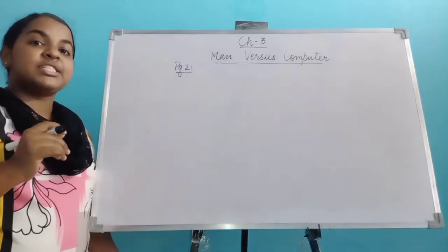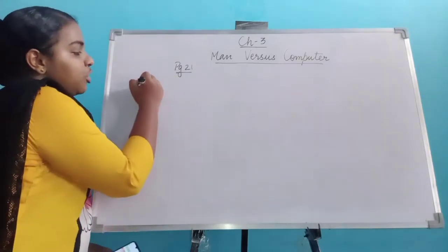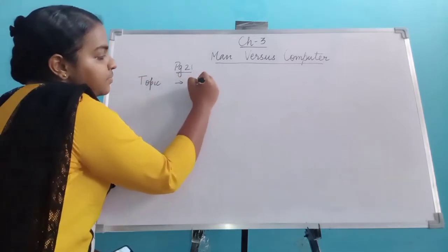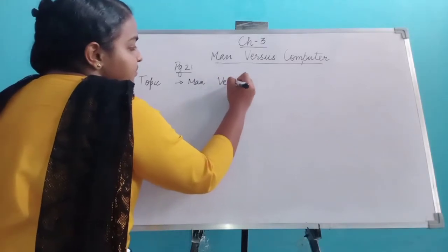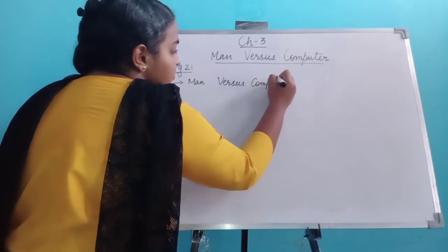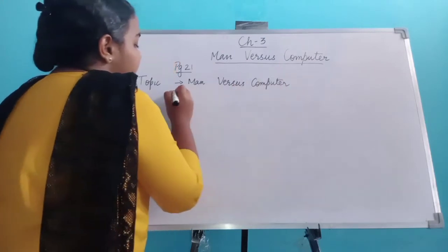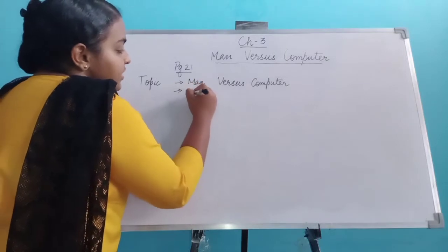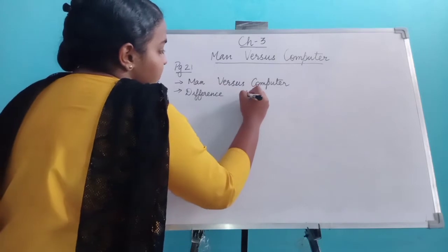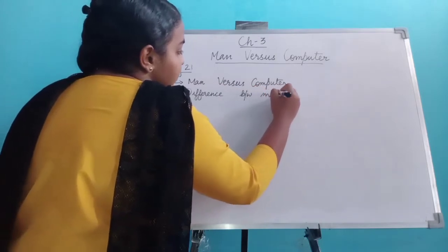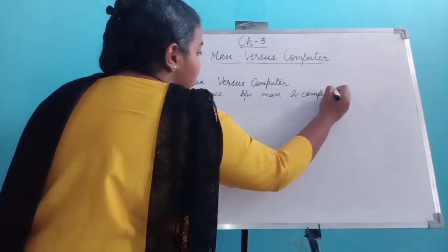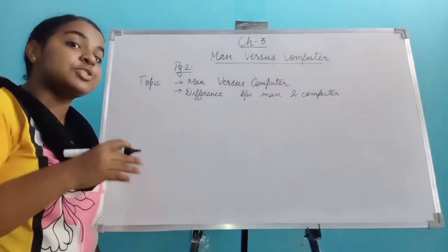In page number 21 you can see the topics which we are going to cover: man versus computer, and the difference between man and computer. These are the two topics which we are going to cover in this chapter.